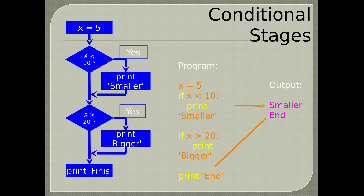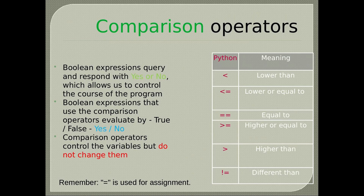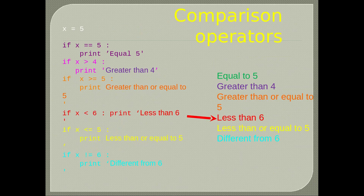Comparison operators: Boolean expressions query and respond with yes or no, which allows us to control the course of the program. Boolean expressions using comparison operators evaluate to true or false. Comparison operators control the variables but do not change them. Remember, the equal sign is used for assignment. You can find in the table the meaning of each of the signs. Here we have a list of tests for x: if it is greater than 4, equal to 5, and so on.